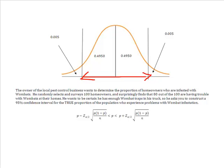How do we do that? Let's take a look at this problem. The problem says that the owner of a local pest control business wants to determine the proportion of homeowners who are infested with wombats. He randomly selects and surveys a hundred homeowners and very surprisingly, he finds that 80 out of 100 of them are having trouble with wombats at their homes. He wants to be certain that he has enough wombat traps in his truck. So, he has asked you to construct a 95% confidence interval for the true proportion of the population who experience problems with wombat infestation.